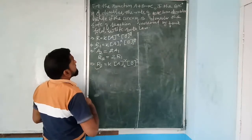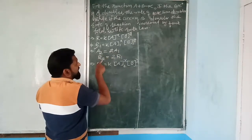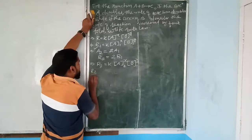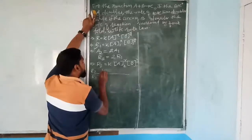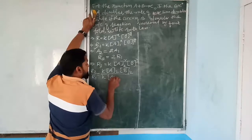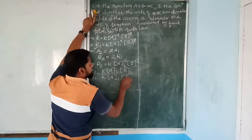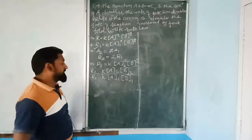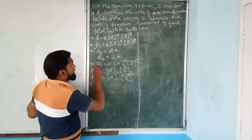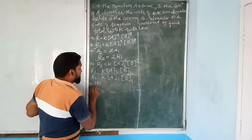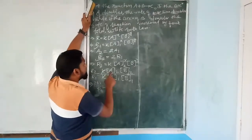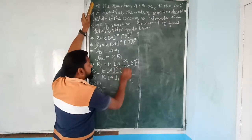Next problem from the same topic: for the reaction A + B → C, if the concentration of A doubles, the rate of reaction gets 8 times; and when concentration of B doubles, the rate of reaction also doubles. Write the rate law.